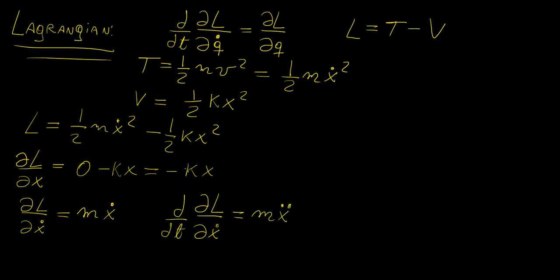So now if we plug these two expressions back into the Euler Lagrange equation, we're going to get mx double dot equals to minus kx, and then this is going to give us exactly the same thing we got using Newton's method, which is mx double dot plus kx equals to zero.